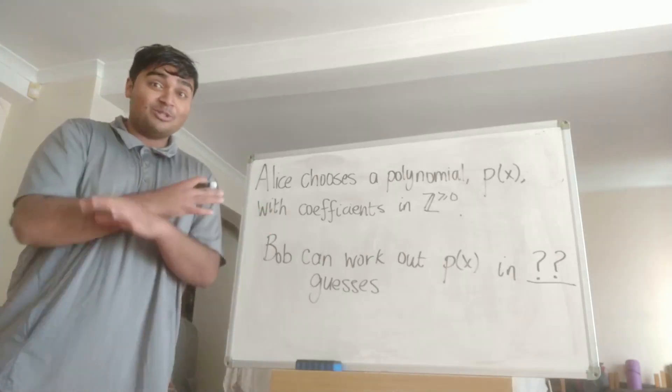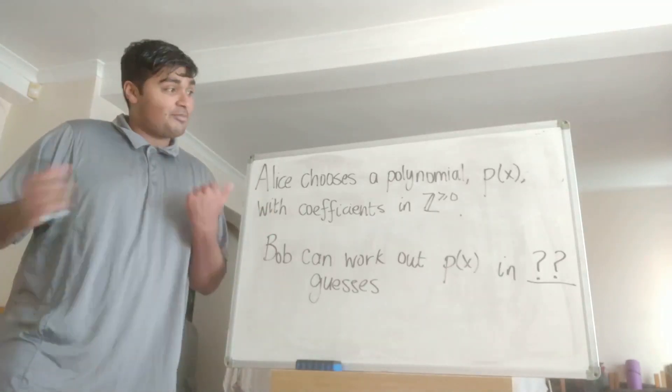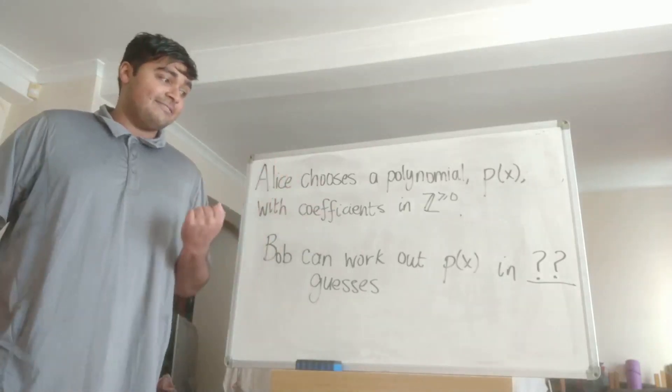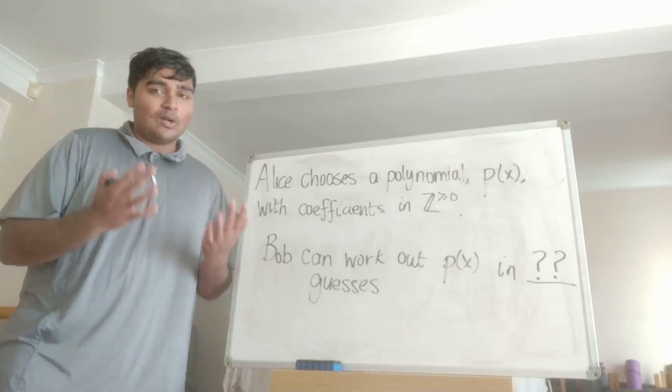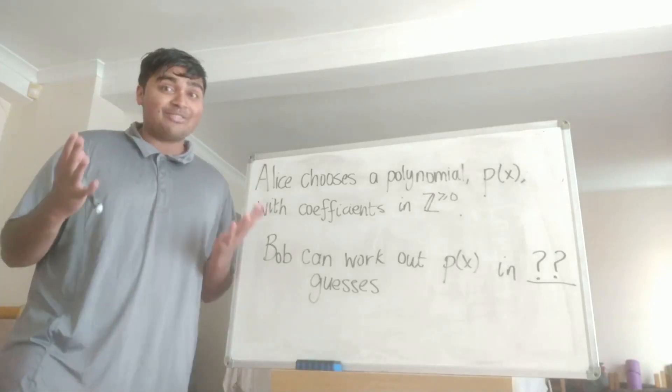So Alice's polynomial could be any degree, any length, provided all the coefficients are non-negative integers and from that alone, Bob can get Alice's polynomial with just one guess. Let's jump into how that's possible.